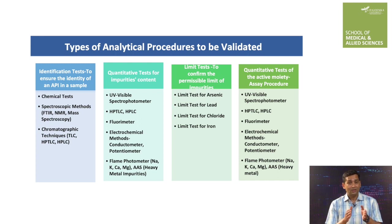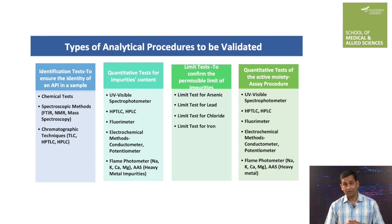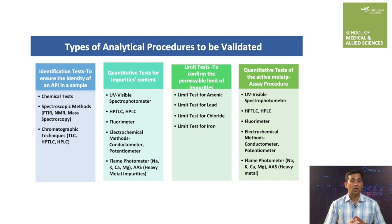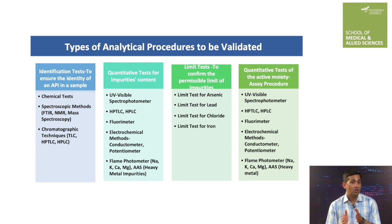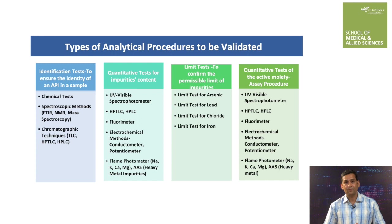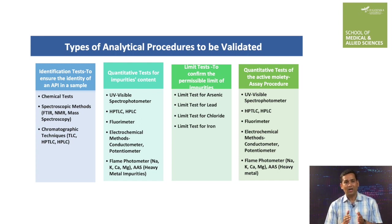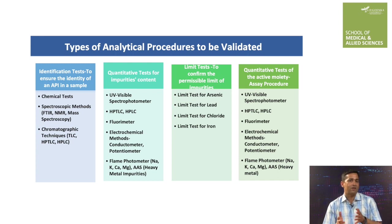The next category is limit tests, which are performed to confirm the permissible limit of certain impurities. For example, limit test for arsenic, lead, chloride, and iron.